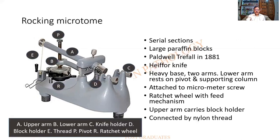All parts have been labeled. There is a pivot on one arm; A is the upper arm, B is the lower arm, E is the string, R is the ratchet wheel, D is the block holder, and C is the space for the knife. This particular microtome is used for serial sections.